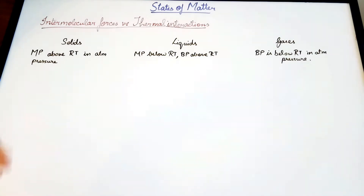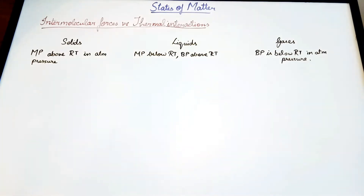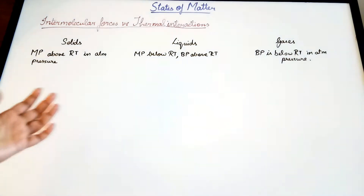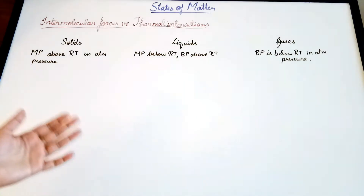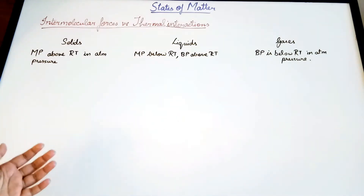For example, most metals exist as solids, except for gallium and mercury. Iron is a solid and its melting point is quite high. Liquids, on the other hand, have melting points below room temperature. Water is the best example.